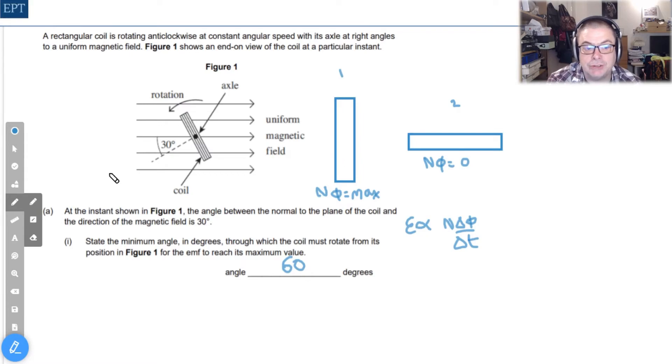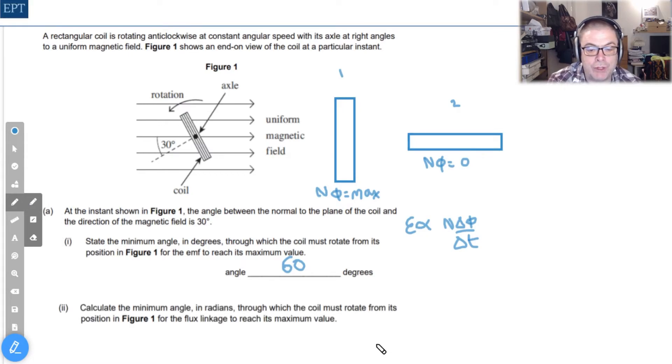The next part of the question asks us to find the minimum angle in radians through which the coil must rotate for the flux linkage to reach its maximum value.